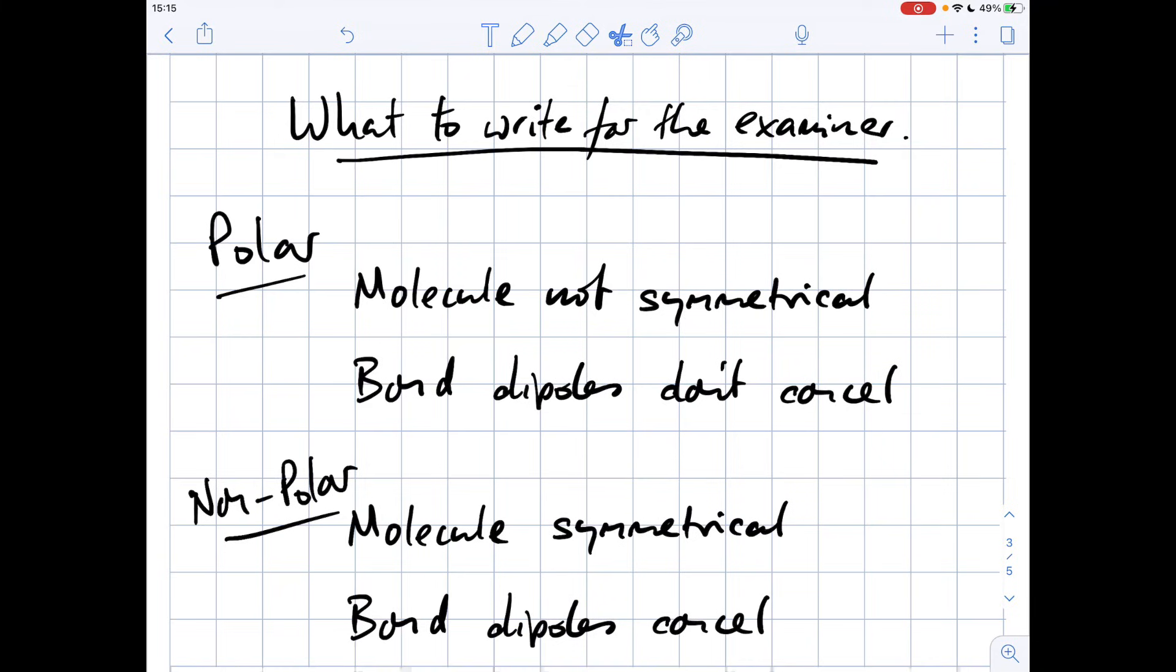For a non-polar molecule, the molecule's symmetrical and that's because either you haven't got any different terminal atoms or you haven't got any lone pairs. And therefore, the bond dipoles are able to cancel out, and so there's no overall dipole on the molecule. So hopefully, if you have been confused by this, this little video will have helped. Thank you.